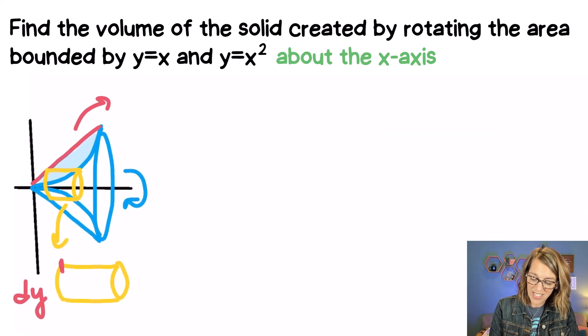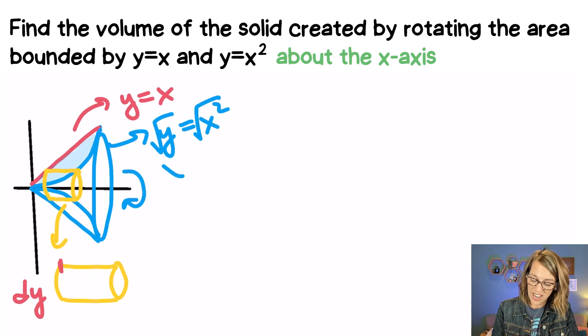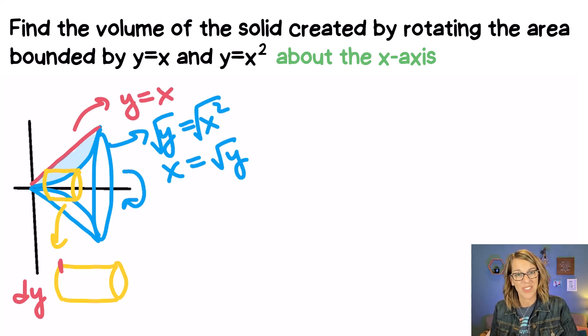Let's go ahead and start there. Well my red line is just y = x. So that one works. I don't need to solve for x. The second one is y = x^2. So I do need to solve for x so that I've got my function in terms of y. Let's take a square root, and I can say that x is the square root of y.